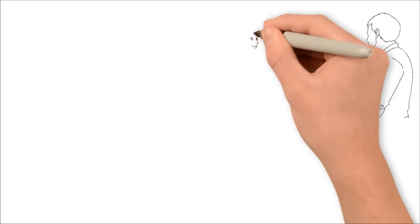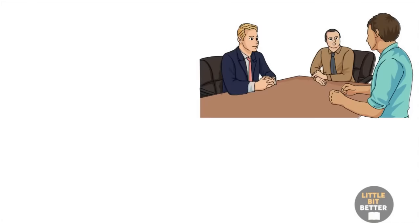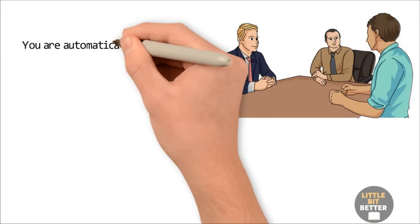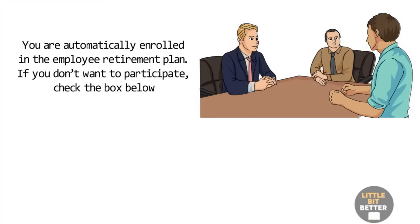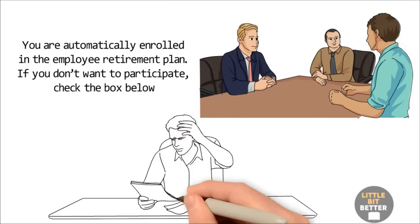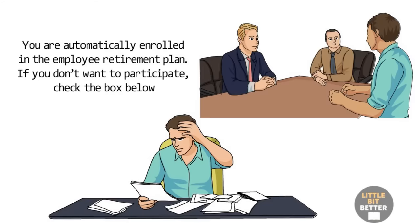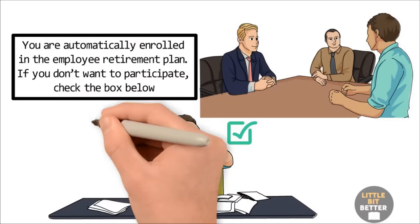Now, imagine your company wants to enroll you in a retirement program that is not in your best interest, but is in the interest of the company. So here you are joining the company the first day and the form says you are automatically enrolled in the employee retirement plan. If you don't want to participate, check the box below. You're already nervous since it's the first day. Plus, you probably don't understand well what the employee retirement plan is. Because of that, you are highly unlikely to check the box and cancel your enrollment. You'll simply think that this is the best option and the company has considered your interests. But what if they haven't? What if they benefit from enrolling you into the plan in some way?